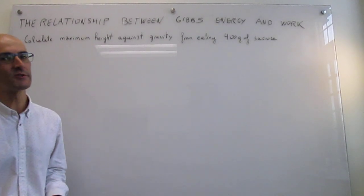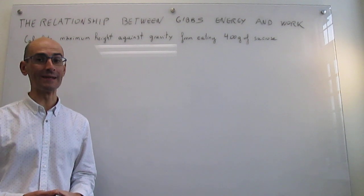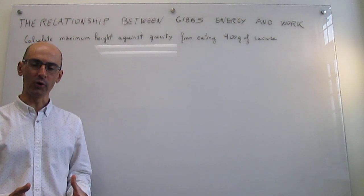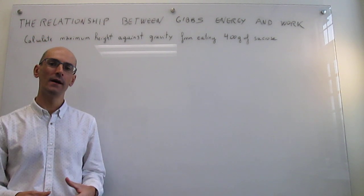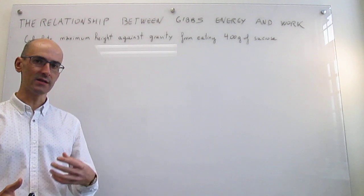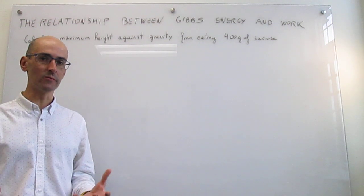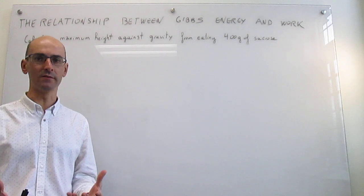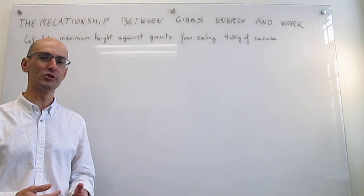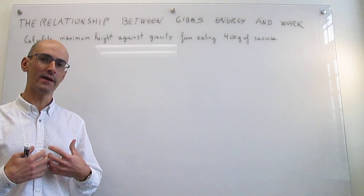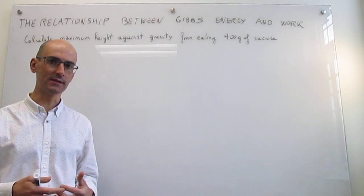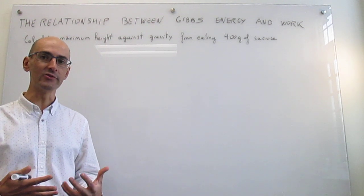In this video we're going to illustrate the relationship between Gibbs energy and work by working out a numerical example. In the example we're going to be ingesting four grams of sucrose, which is the equivalent of about a couple of sugar cubes, and then that sucrose is going to be metabolized in our cells to generate energy.